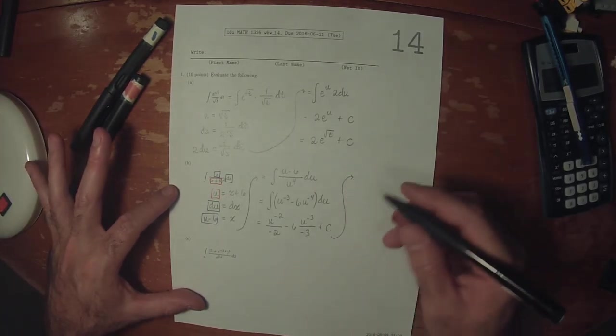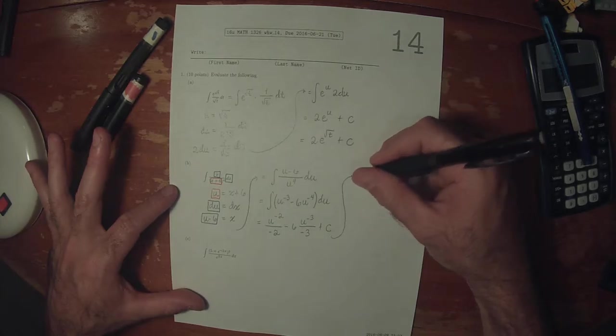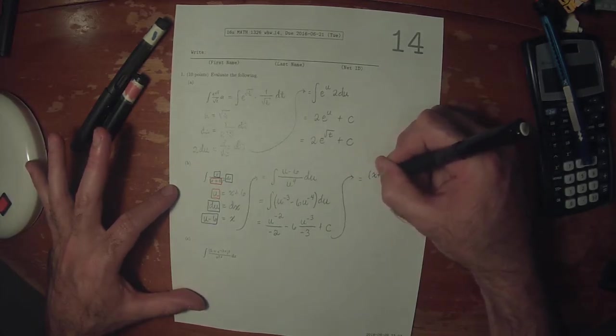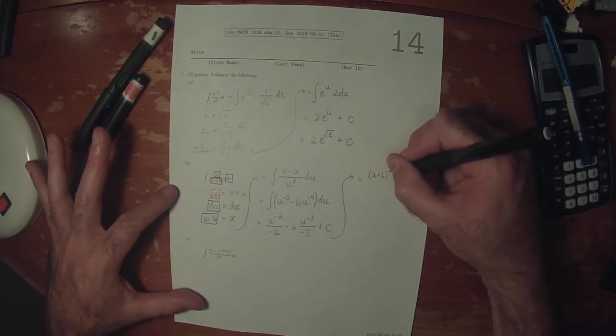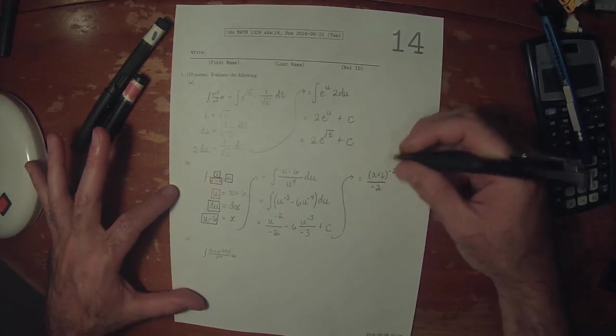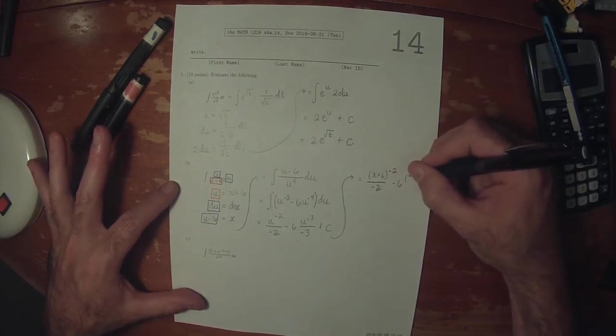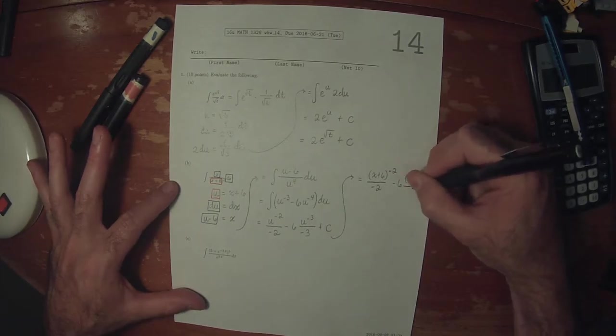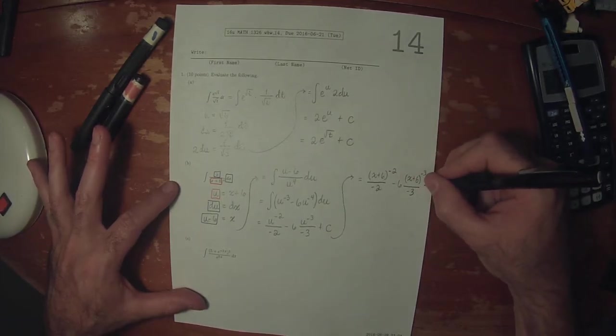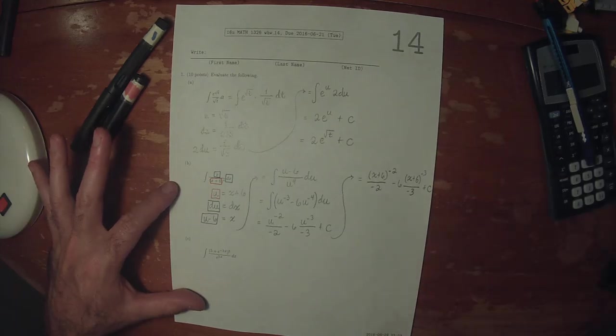And then resubstituting x: x plus 6 to negative 2, divide by negative 2, minus 6, x plus 6 to negative 3, divide by negative 3, plus an unknown constant.